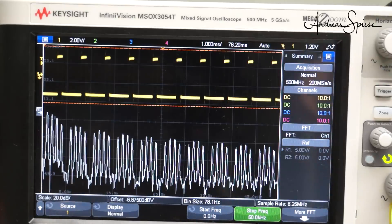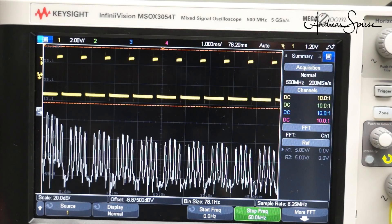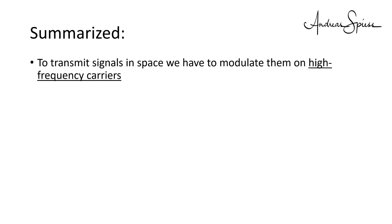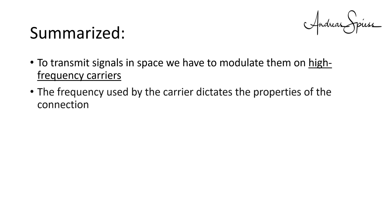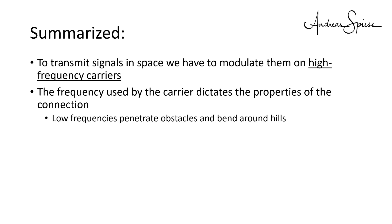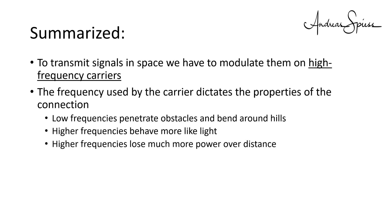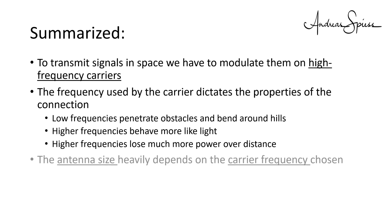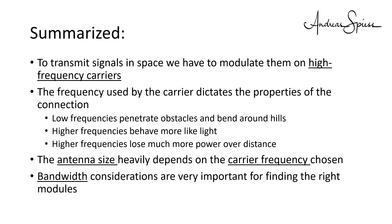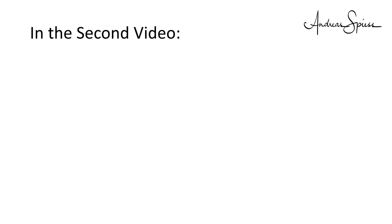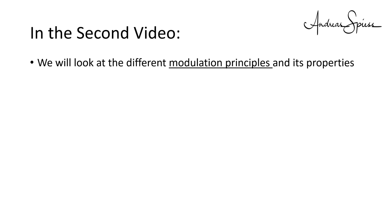How can we load these signals on the carrier frequency? These and many other questions are answered in the second part of this tutorial. Summarized: to transmit signals in space, we have to modulate them on high-frequency carriers. The frequency used by the carriers dictates the properties of the connection. Low frequencies penetrate obstacles and bend around hills; higher frequencies behave more like light and lose much more power over distance. The antenna size heavily depends on the carrier frequency chosen. We started to understand signals and their bandwidth, which is very important when trying to find the right devices.